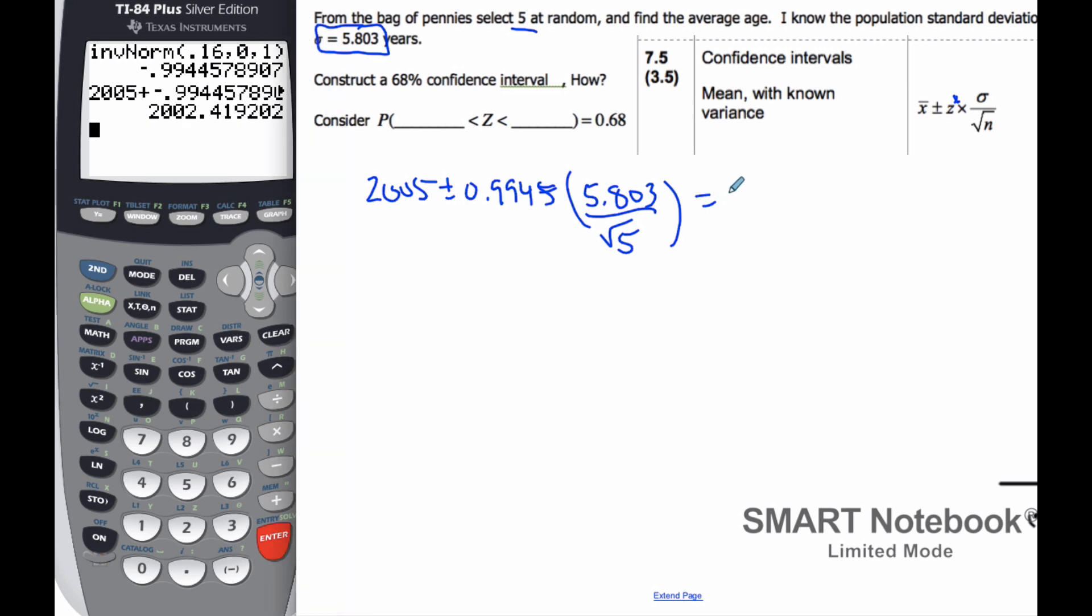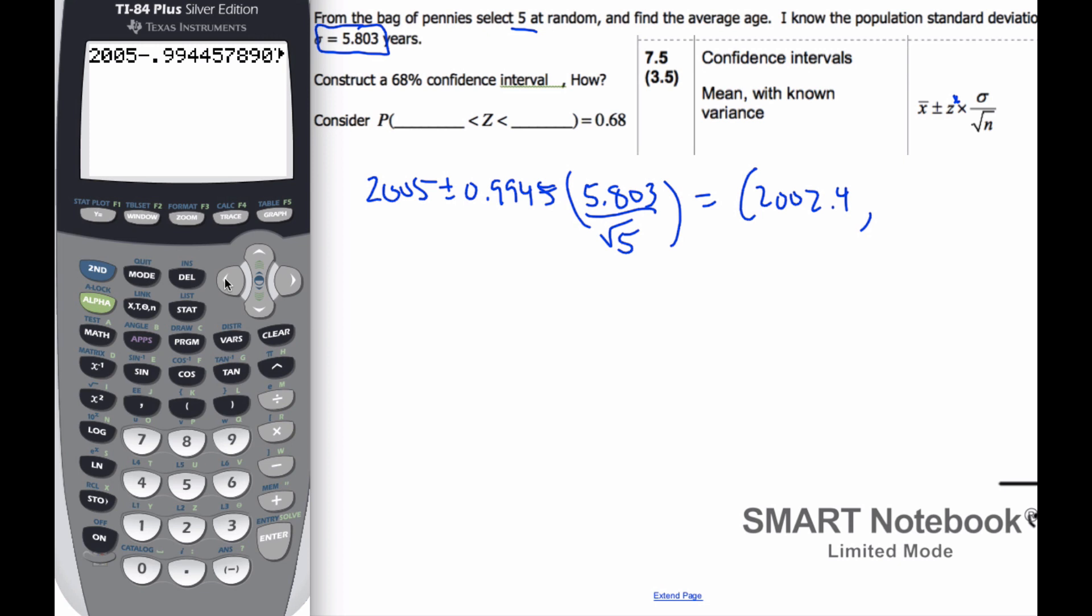And when I do this calculation, 2005, so that'll be actually minus, times 5.803 divided by the square root of 5, I get 2,002.4, and if I do the other version of it, plus it to make it the upper bound, I get 2,007.6.